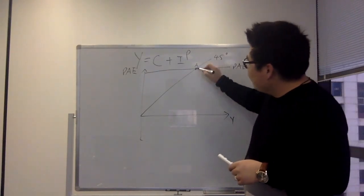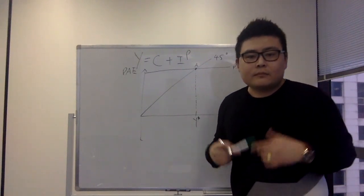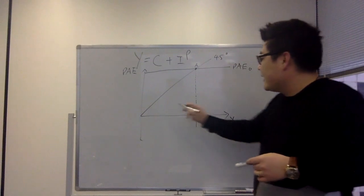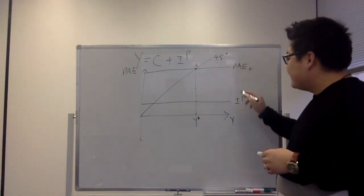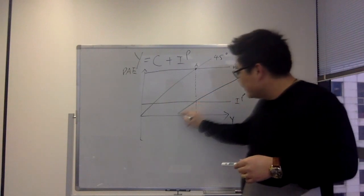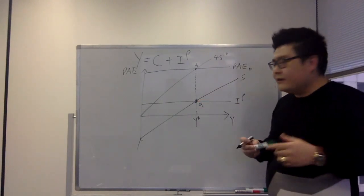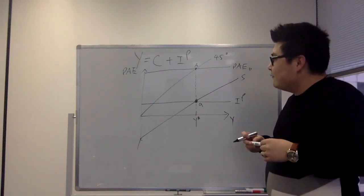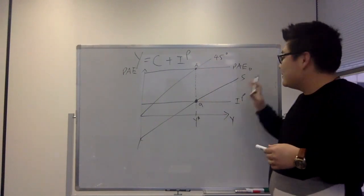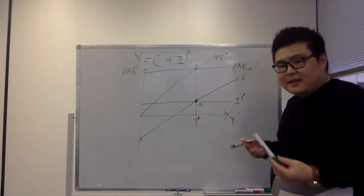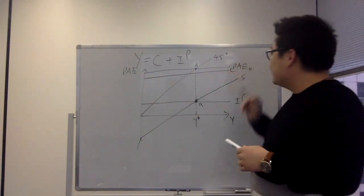From point A, take a line down, which corresponds to the potential level of output. The next part is that we have the planned investment IP. Once we have IP, we have the savings curve. The savings curve ensures that at this particular point it corresponds to little a. The Keynesian 45-degree diagram works such that PAE equals output, which also equals when saving equals planned investment. We also have a consumption curve.